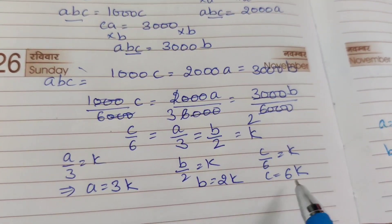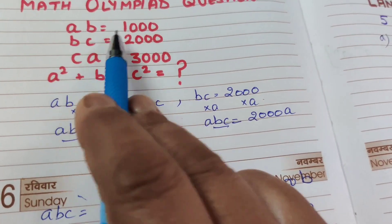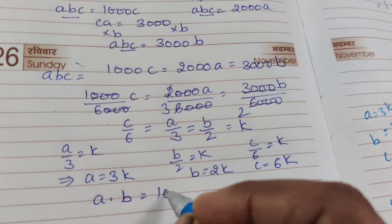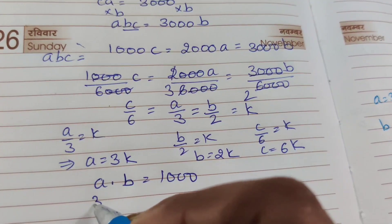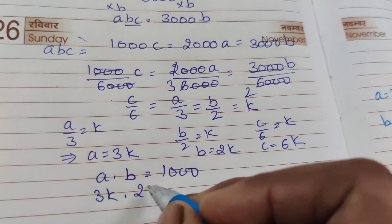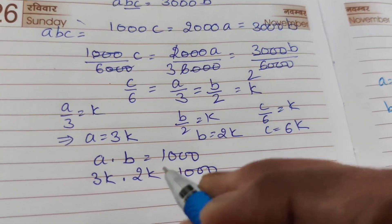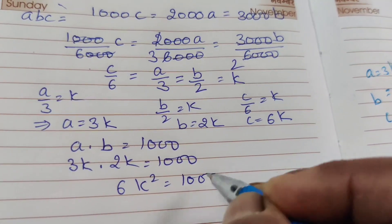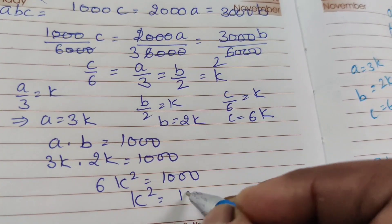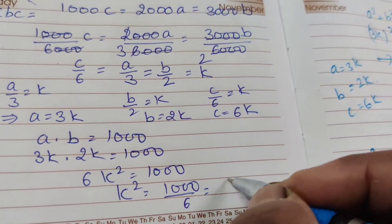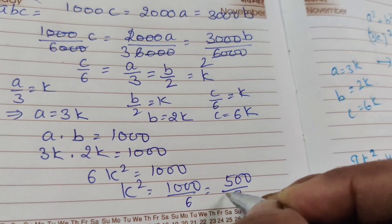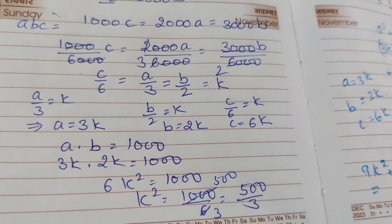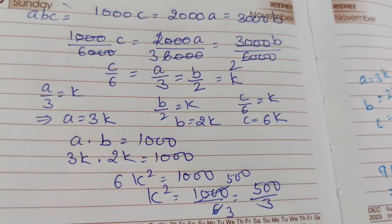Now find the value of K. Since AB equal to 1000, we substitute A and B: 3K times 2K equals 1000, so 6K squared equals 1000. Therefore K squared equals 1000 by 6, which simplifies to 500 by 3.